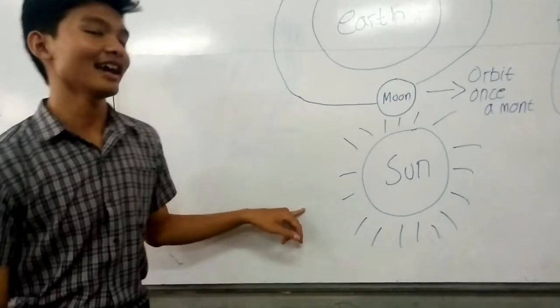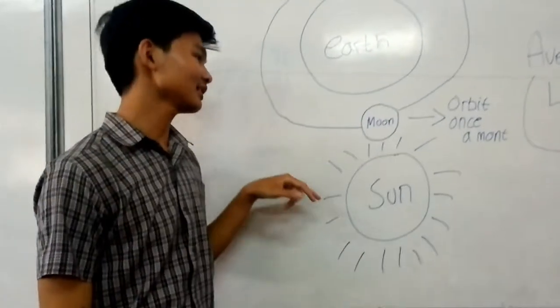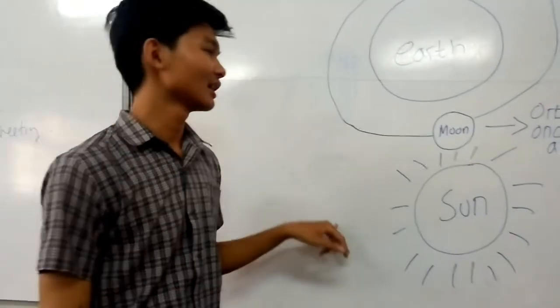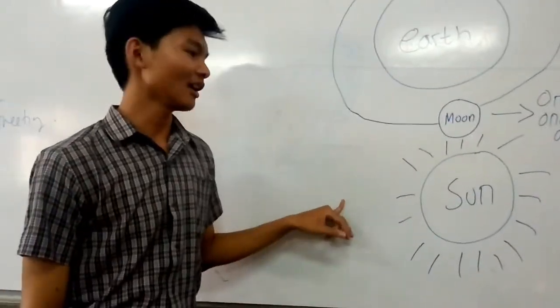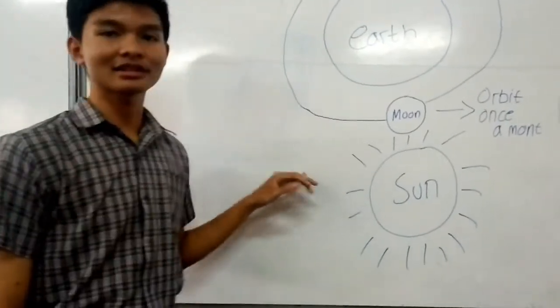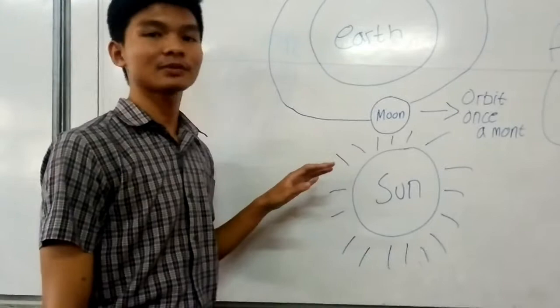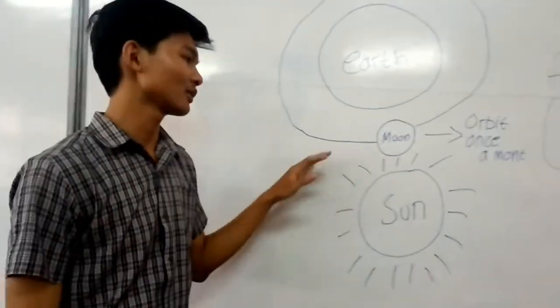The solar eclipse is an incident of nature and it's happened because the moon and the sun appear almost the same size, but in reality the sun is much larger than the moon.